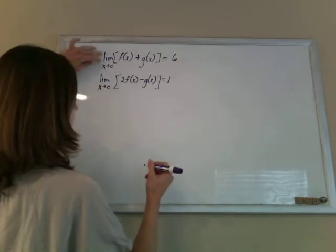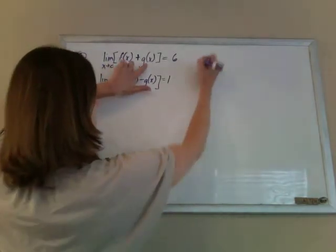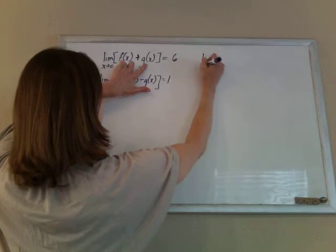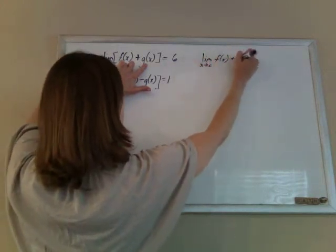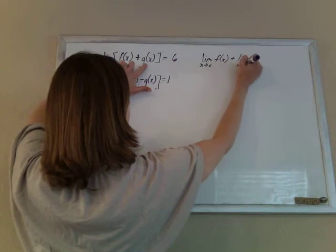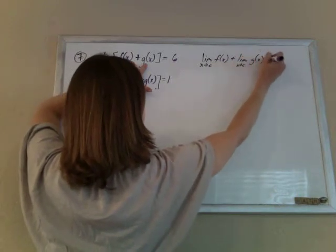So if the limit of f(x) plus g(x) is 6, then I can break this up: the limit of f(x) plus the limit of g(x) equals 6.